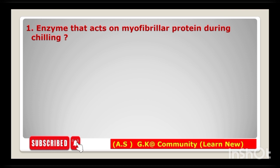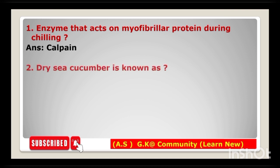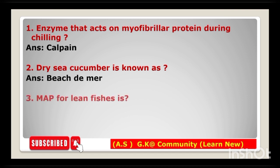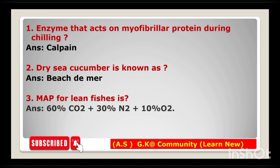The first question is: enzyme that acts on myofibrillar protein during chilling. The answer is calpain. Second question: dry sea cucumber is known as beach-de-mer. Third question: MAP for lean fishes — the answer is 60% CO2 plus 30% N2 plus 10% O2.